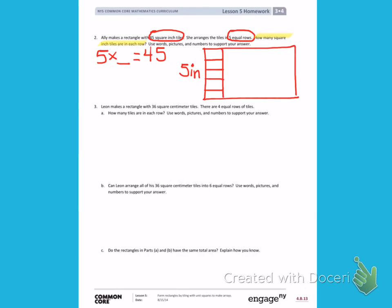So I can skip count by 5 until I get to 45 to find my answer. 5, 10, 15, 20, 25, 30, 35, 40, 45. That gives me a total of 9.